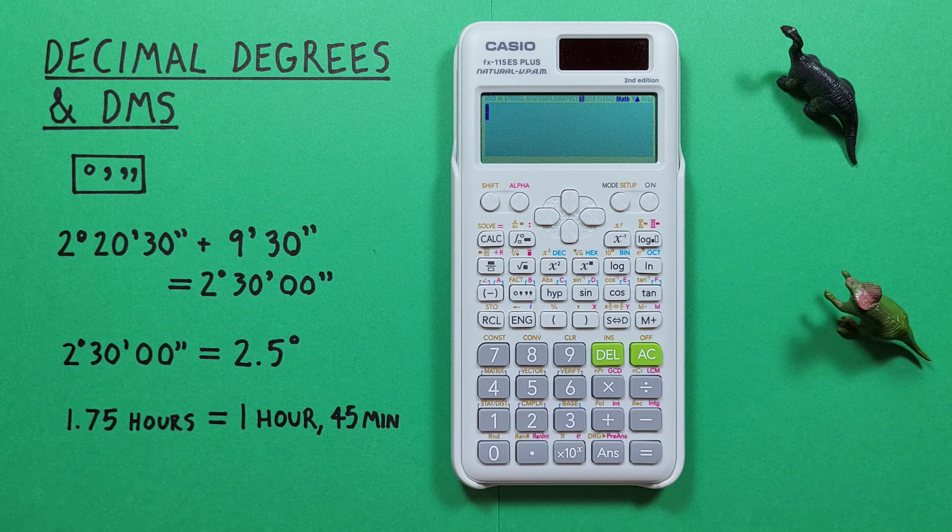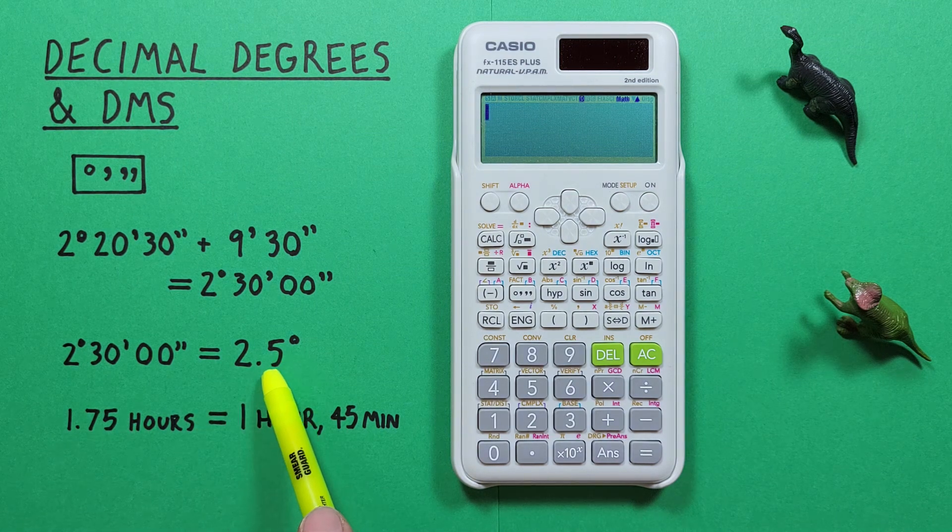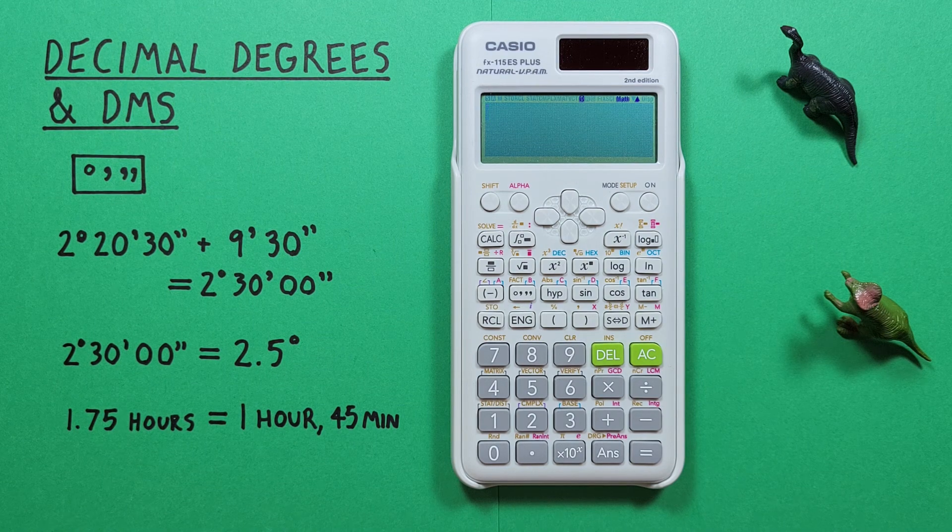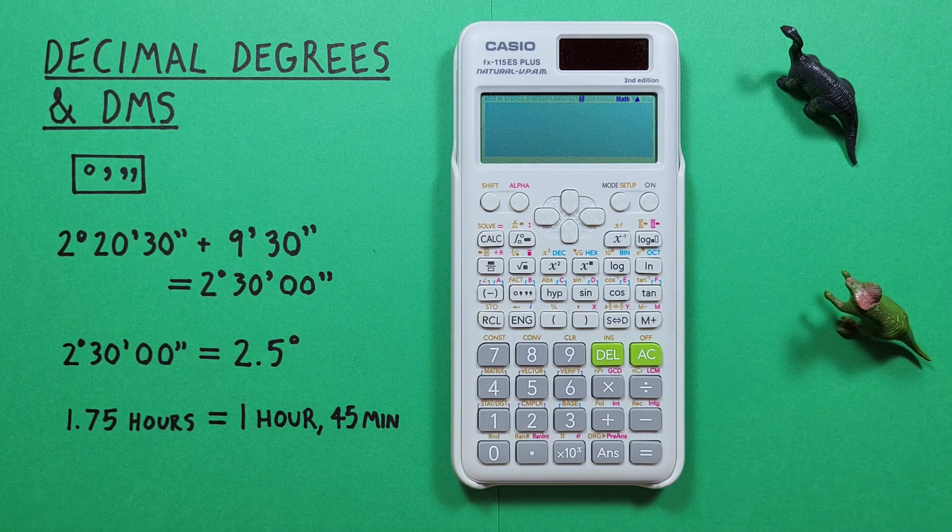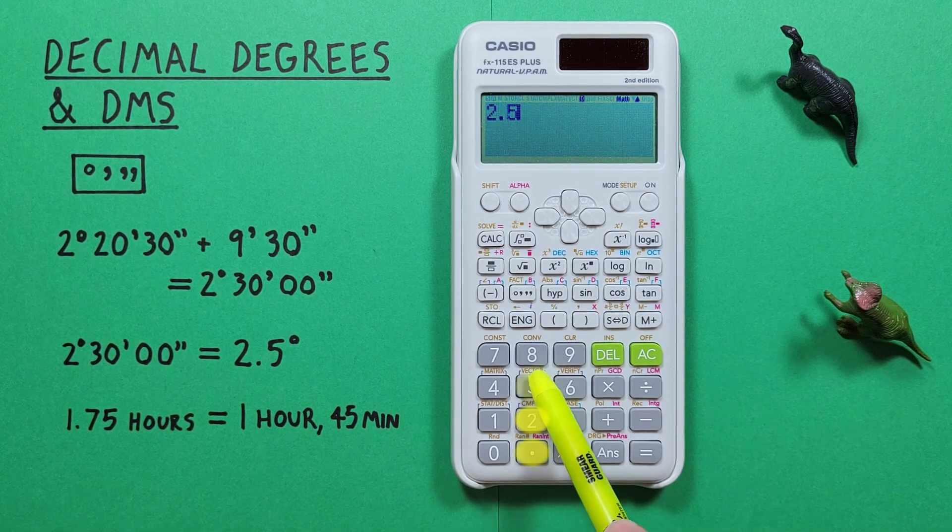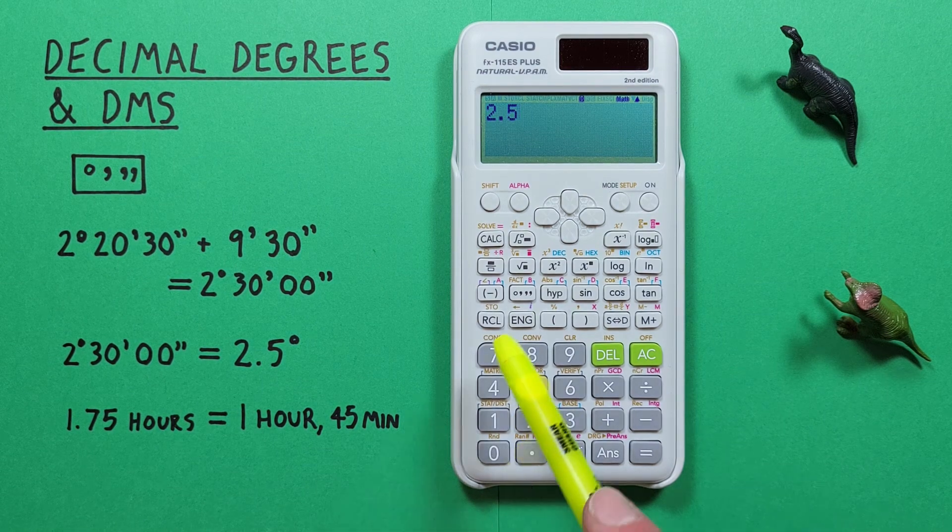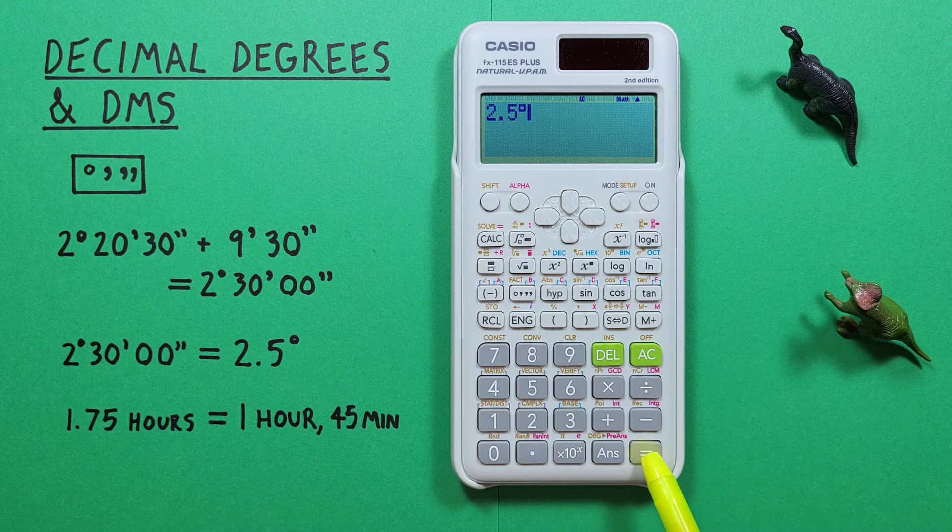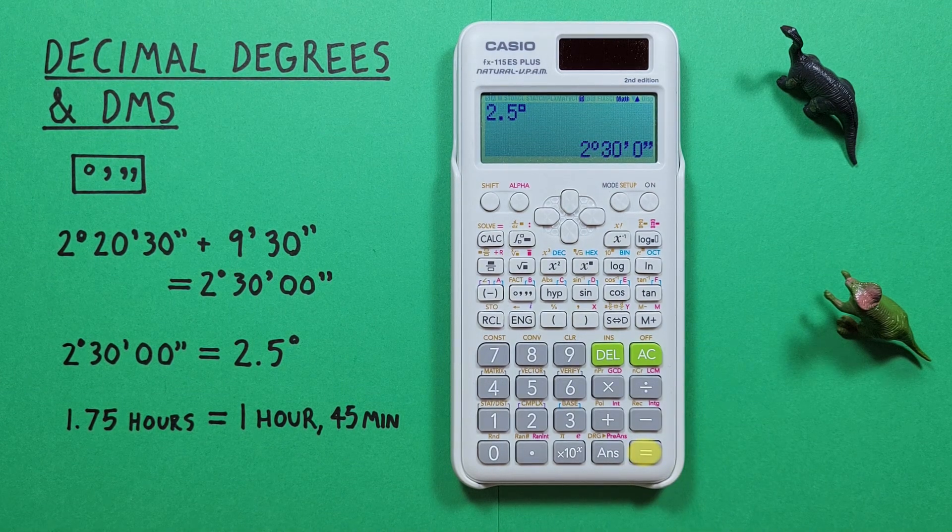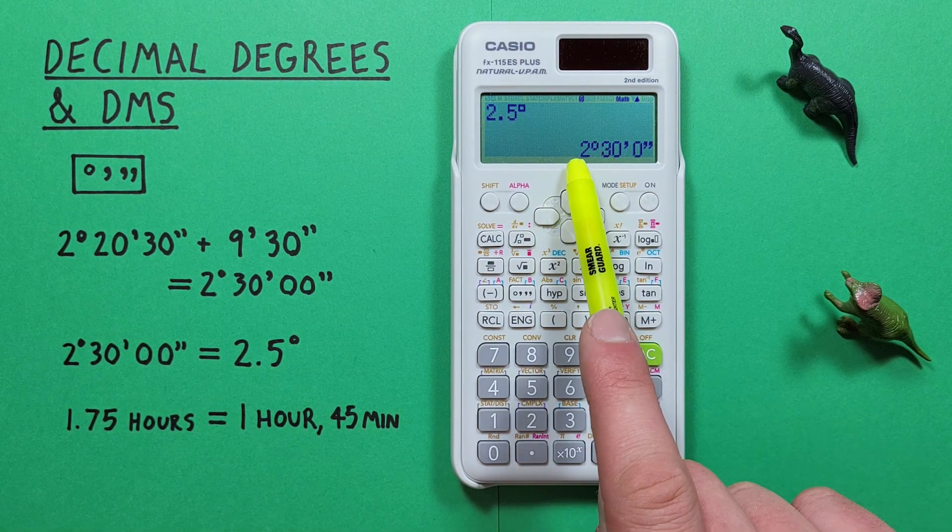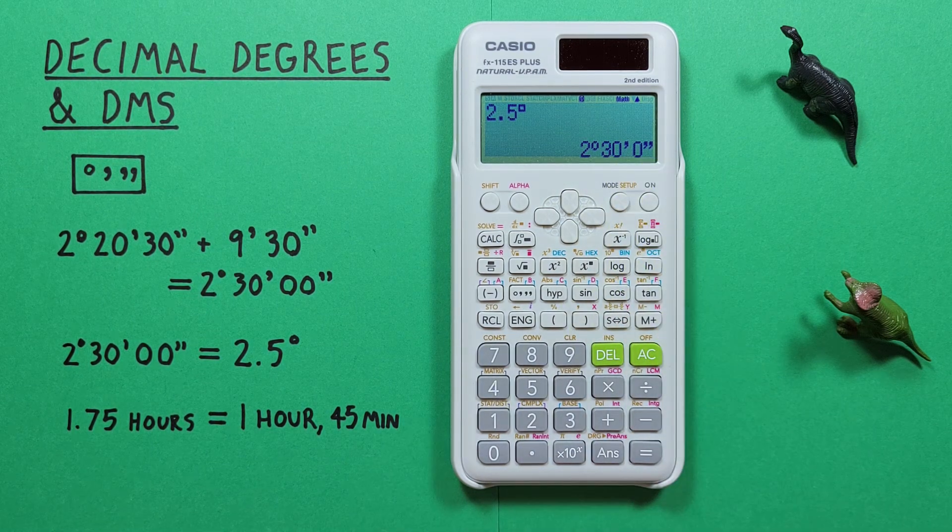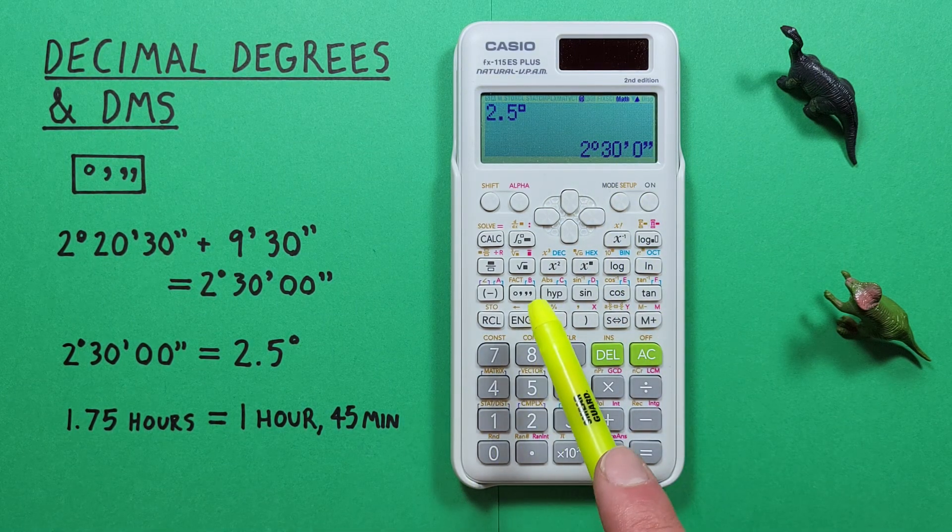What if we were given 2.5 decimal degrees and wanted to convert that to degrees minutes seconds? To do that we start by entering our decimal degrees so 2.5 and then hit our degrees key and press equals and we see that automatically converts to 2 degrees 30 minutes 0 seconds and we can convert back and forth with the degree key.